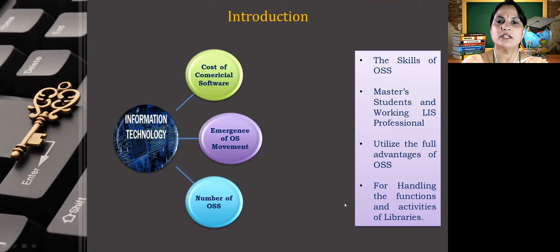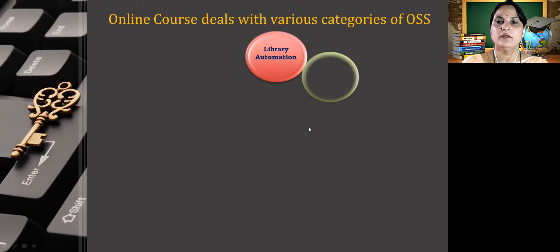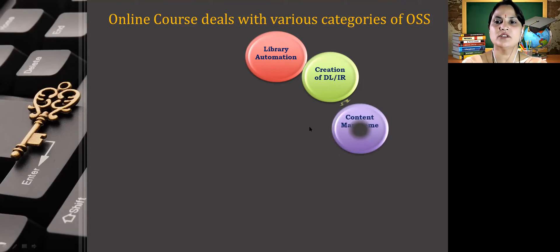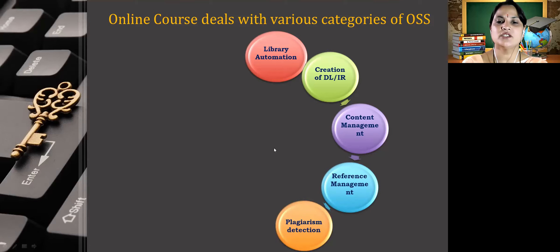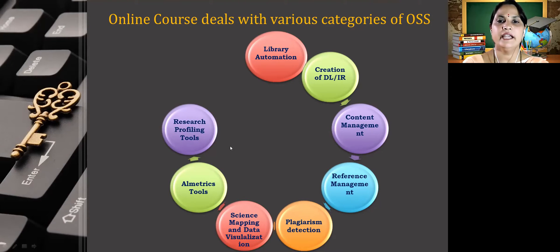Hence, this course has been proposed to provide practical hands-on training on open source software applicable to libraries. This online course deals with various categories of open source software for library automation, creation of digital library and institutional repository, content management, reference management, plagiarism detection tools, science mapping and data visualization tools. All metric tools, research profiling tools, and online teaching tools are also covered in this course.